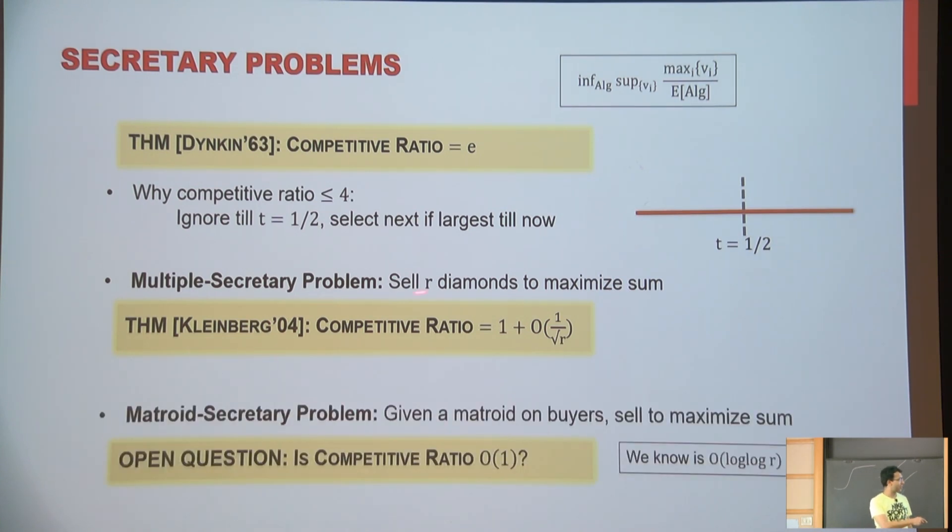And one important open question in this field is the so-called Matroid secretary problem. So I'm not going to define what a Matroid is, but it's again some kind of constraints on these buyers. The point is, the reason it's interesting is because the discrete optimization world, these are very easy to solve. So running a very simple greedy algorithm already gives you the optimal algorithm. So the discrete optimization, if you know all the values up front, these are trivial to solve.